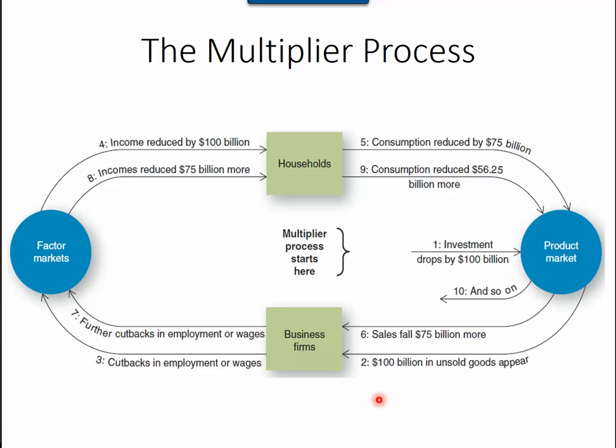However, when the economy reached around July 2006, home prices stopped rising. This alarmed real estate investors, who lost their optimistic expectations about the future housing market. As a result, the first thing they did was reduce investment.